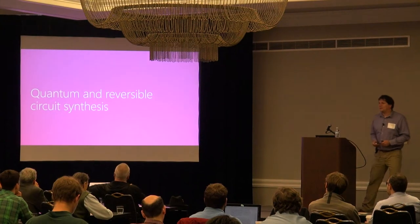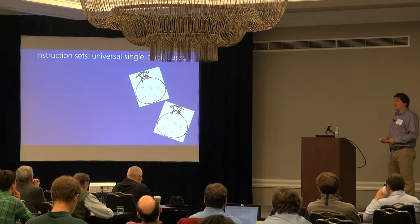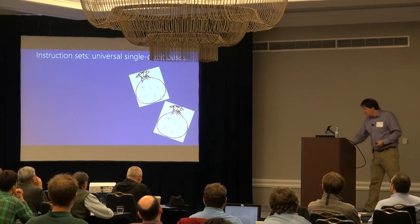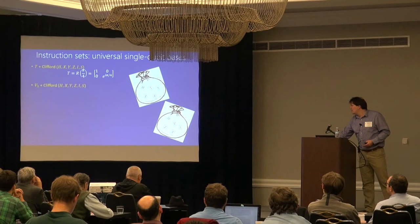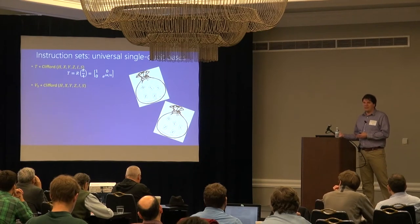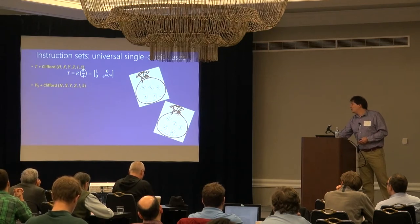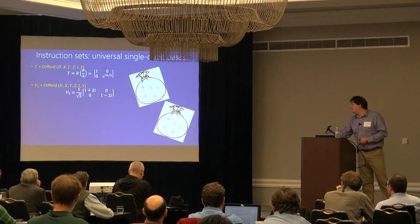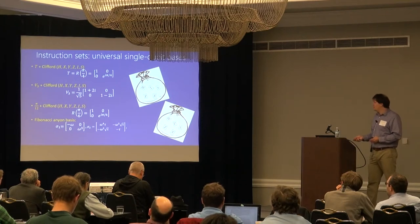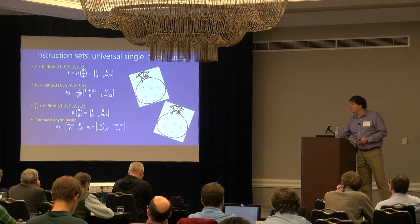Let's shift gears and talk about synthesis. First, what's the gate set? That's a moving target — we don't know the best fault-tolerant gate set. A very popular one is Clifford and T. Various others have been proposed, like the V-gate, which relates nicely to quaternions. There's no code known to directly give us the V-gate; we can get it via probabilistic constructions. The point is we want to synthesize into all these gate sets.